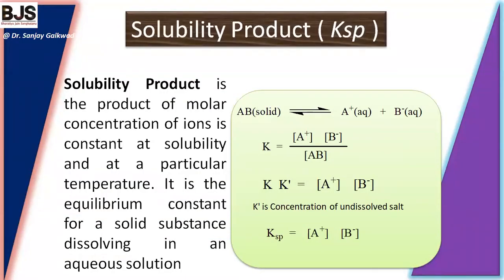The next term is the solubility product. It is the product of molar concentration of ions, which is a constant at a particular temperature. It is the equilibrium constant for solid substances dissolving in an aqueous solution. For example, if AB is a solid, it dissociates into A⁺ and B⁻. The equilibrium constant K equals the concentration of A⁺ multiplied by concentration of B⁻, divided by the concentration of undissolved AB. The undissolved part concentration is denoted as K', so K × K' equals the product of ions A⁺ and B⁻.